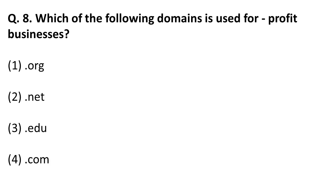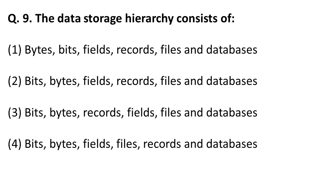The next question: which of the following domains is used for profit businesses? The domain .org is used for organizations, .net is for developers, .edu is for educational institutes, and .com is used for commercial or business purposes.